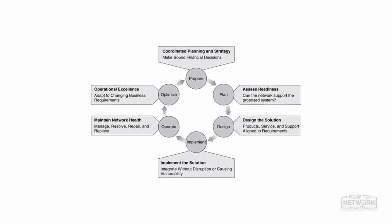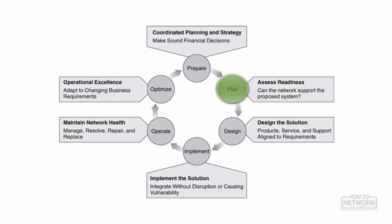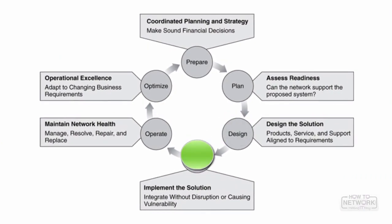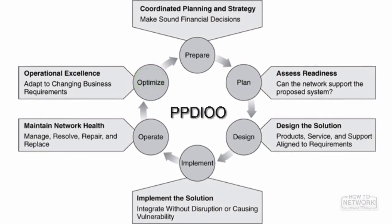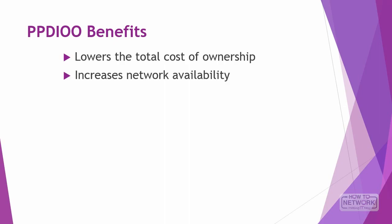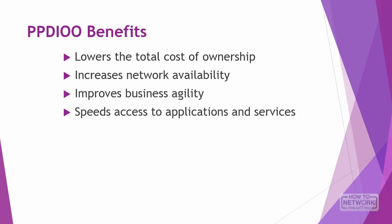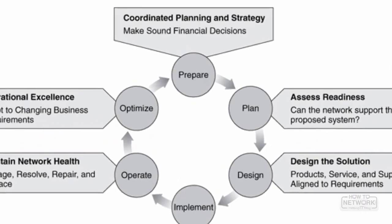Cisco has formalized a network's lifecycle into six phases: Prepare, Plan, Design, Implement, Operate, and Optimize — collectively known as PPDIOO. The lifecycle has four main benefits: it lowers the total cost of ownership, increases network availability, improves business agility, and speeds access to applications and services.